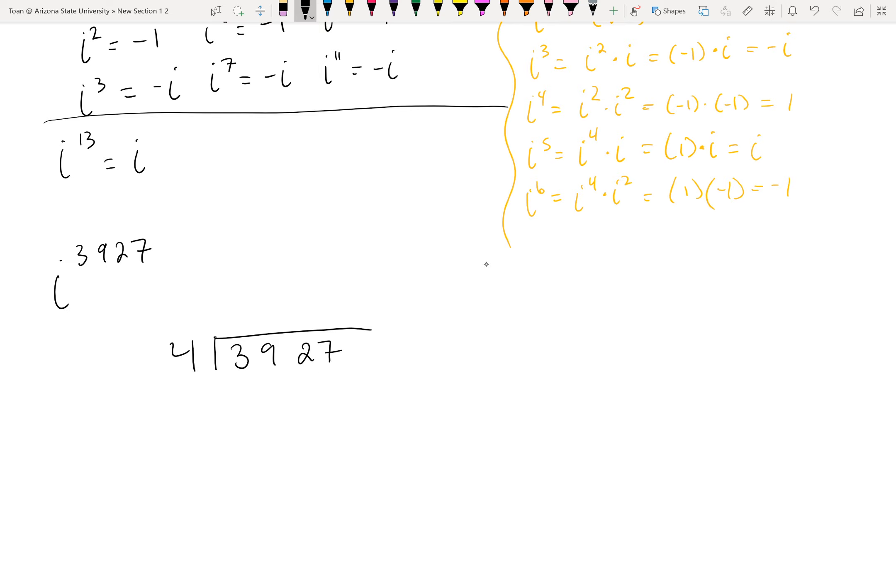So let's go ahead and divide. Four doesn't go into three, so let's think of thirty-nine. Four goes into thirty-nine nine times. That's a thirty-six. And then we subtract. Three, bring down the two. Four goes into thirty-two eight times. Subtract. Zero, seven. Four goes into seven one time with the remainder of three. Now, we're not going to do zero in decimal. Actually, what we're looking for is the remainder. So remainder of three. That's what we want.